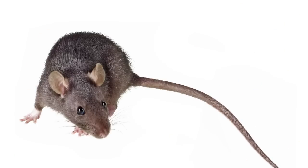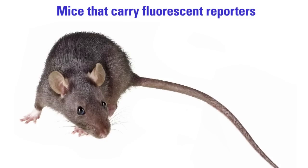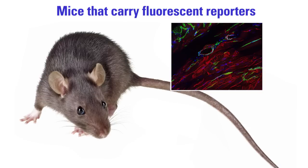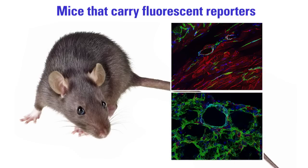We start with mice that carry fluorescent reporters — these mice have been engineered so that initially every cell expresses a red fluorescent protein, tomato, and only those cells that are differentiated endothelial cells have switched from the tomato red color to a green fluorescent color.